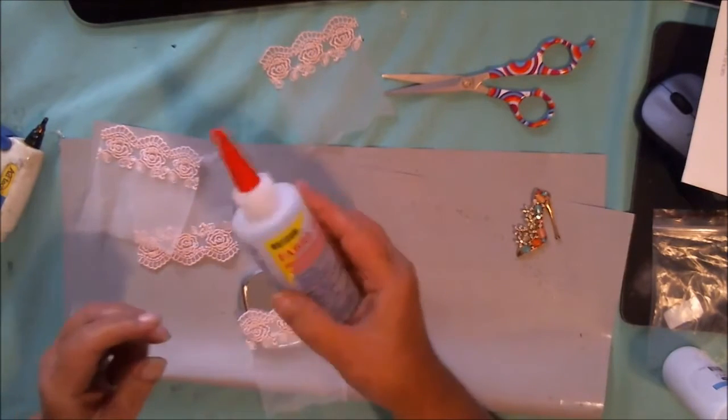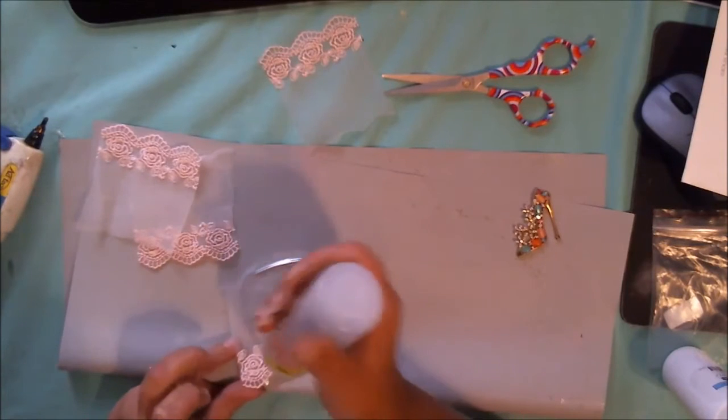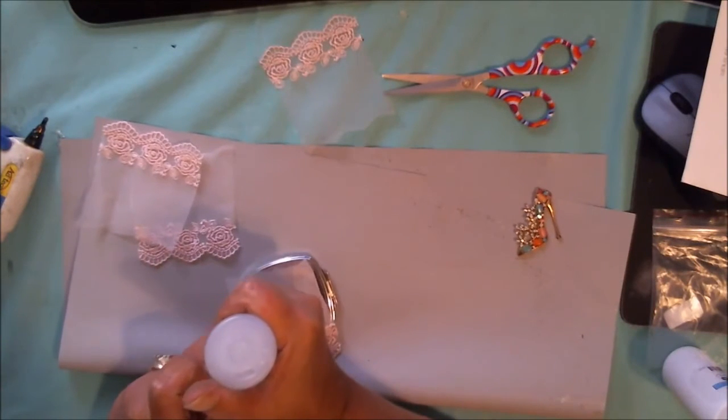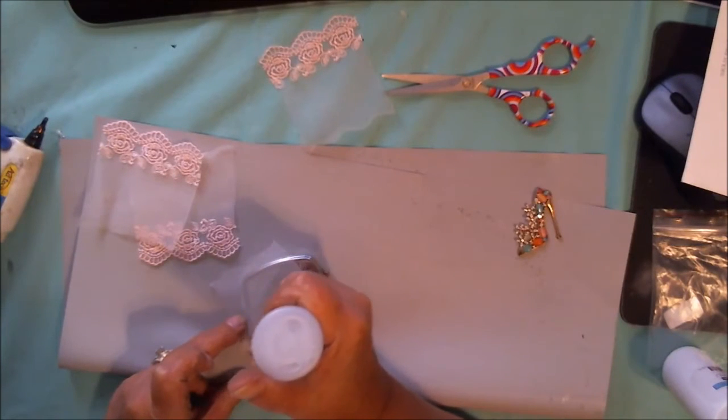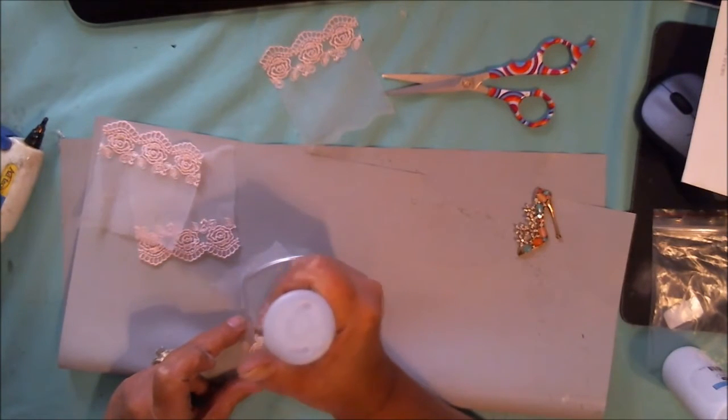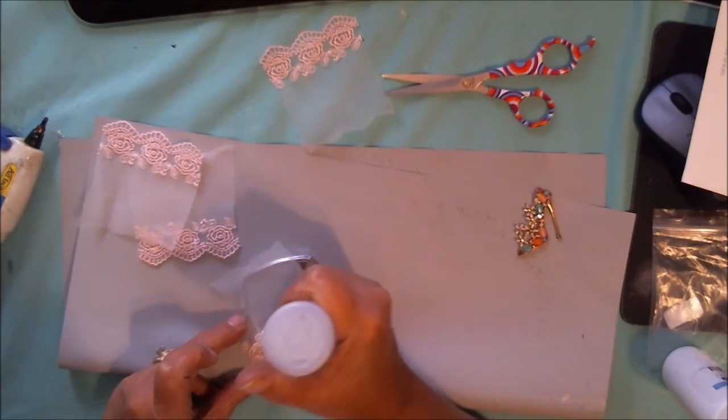And I am going to use my Fabri-Tac now on this. I'm going to turn it over to the wrong side, and I'm just going to put some Fabri-Tac where the embroidery is. I'm going to start with that, and that will get it tacked down for me. I'm just spreading it on there.